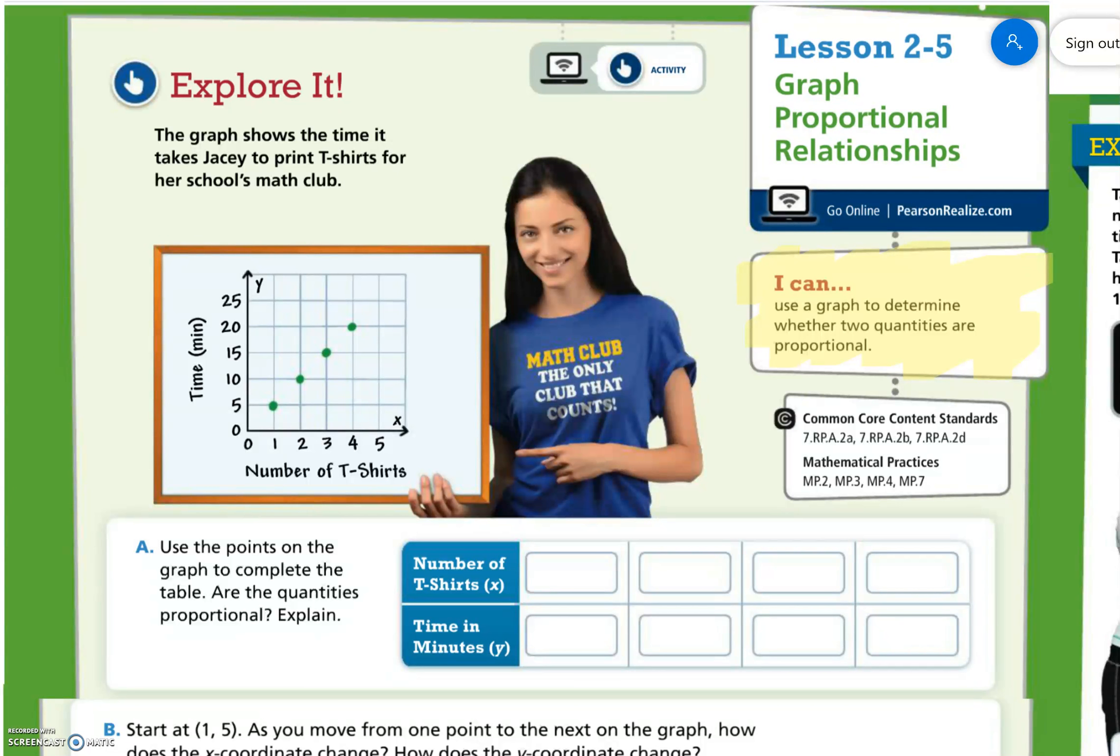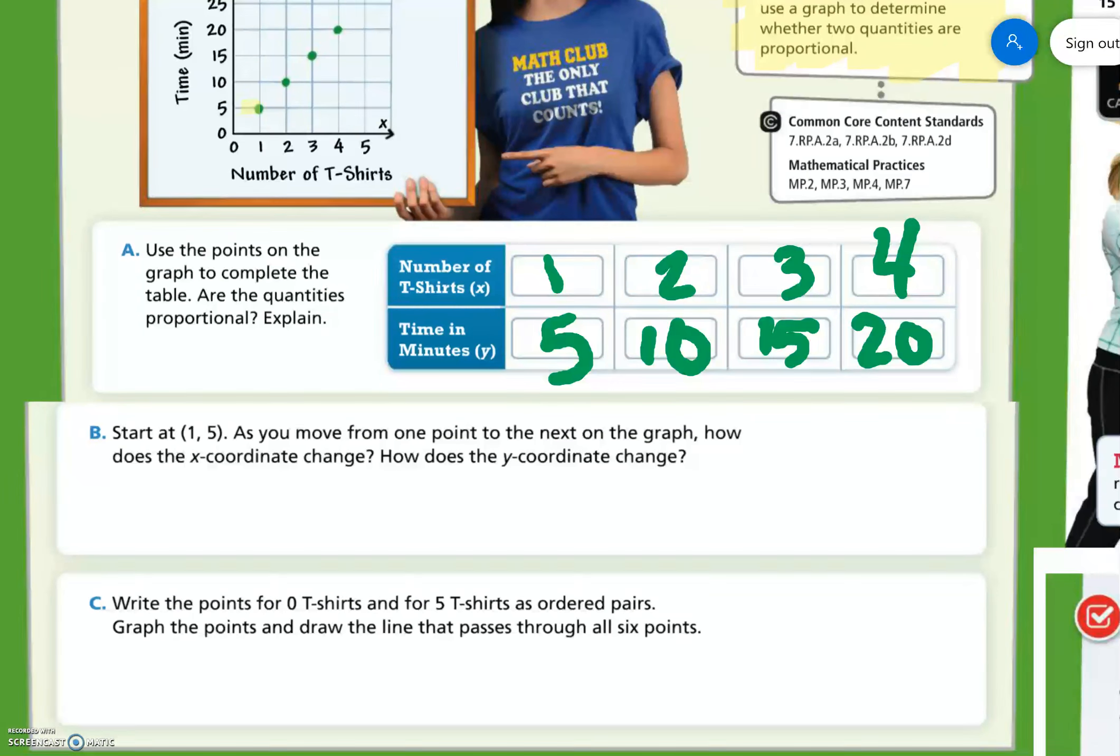So we look here, the first point is at (1,5), so the x value is 1, the y value is 5. Then we have (2,10), (3,15), and (4,20). I want you guys to figure out if those are proportional and explain. Then go to figuring out part B and C.